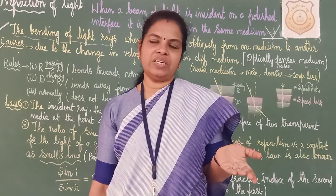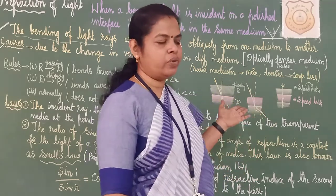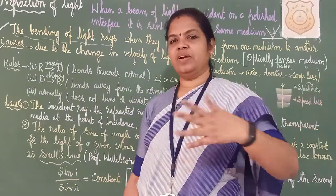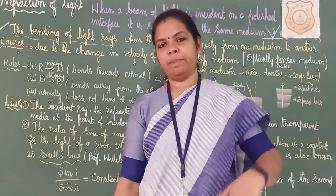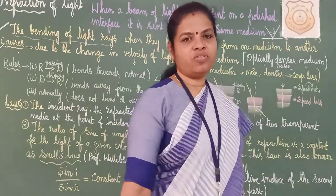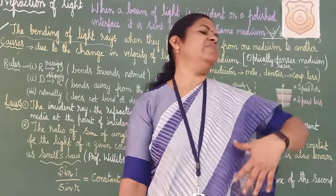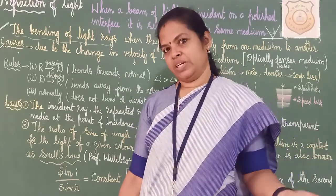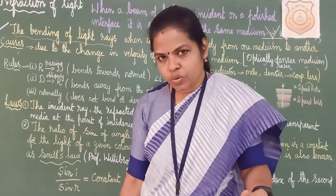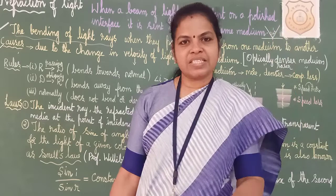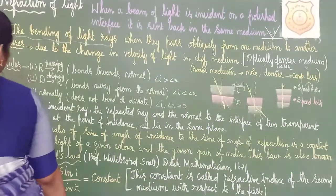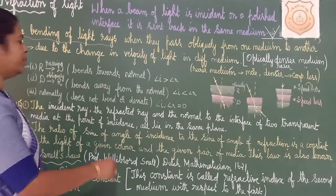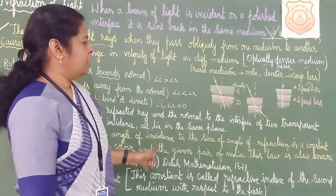At the same time, in the evening when you go home after classes, you relax — denser medium to rarer medium — you move away from the normal. So the diagram shows: this is the optically rarer medium and this is the optically denser medium. Light is going obliquely and hitting the next medium. At the point of incidence, this is the normal line N–N'. The light bends towards the normal.